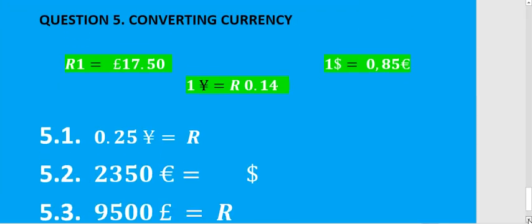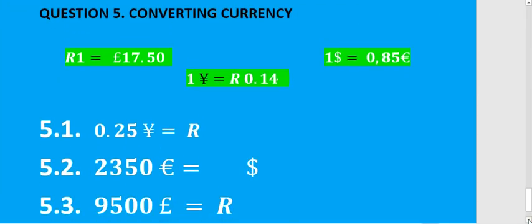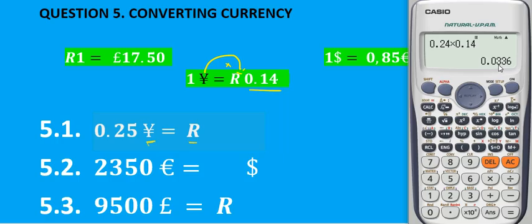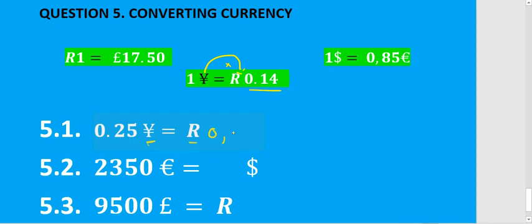Now we convert currency. For 5.1 we convert yen to rand using the yen-to-rand converter. Going forward, so we multiply by 0,14. Take 0,25 multiplied by 0,14. Remember money must always be rounded to two decimal places, so that gives us 0,03 rand.